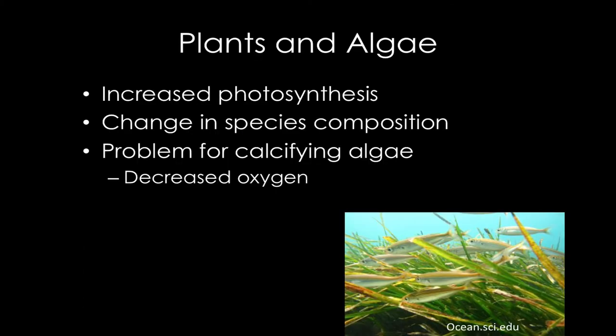Plants are also affected by increased carbon dioxide in the water. Increased CO2 can increase photosynthesis, which can be beneficial to some plants. But some plants are better able to use that increased CO2 than others, meaning some will grow faster and out-compete others — changing the composition of communities. And some algae that are photosynthetic and make hard body parts out of calcium carbonate are affected the same way as animals, having a harder time building their hard parts.